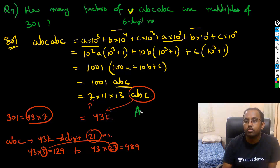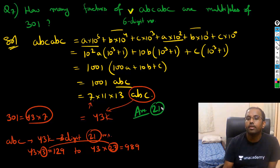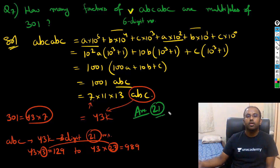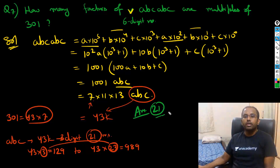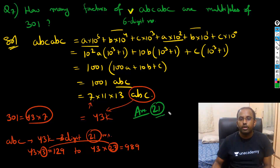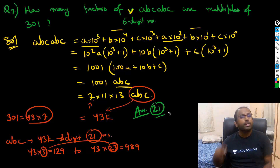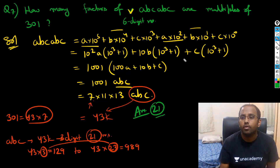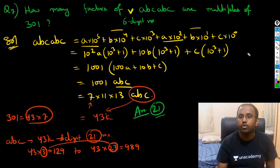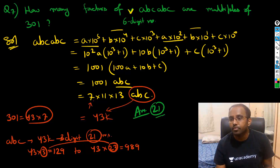So abc can take 21 multiples of 43, meaning the answer is 21. This is a very nice question checking your factorization fundamentals and common sense — a perfect CAT-level question.